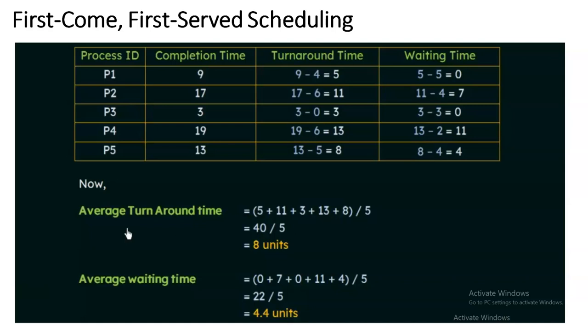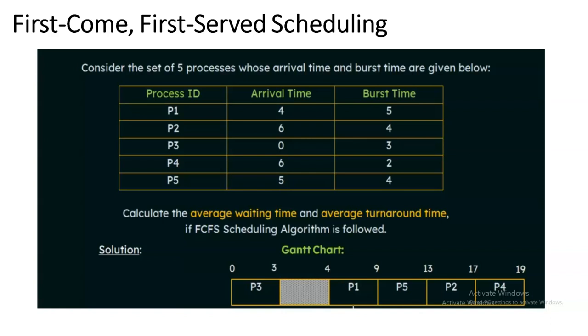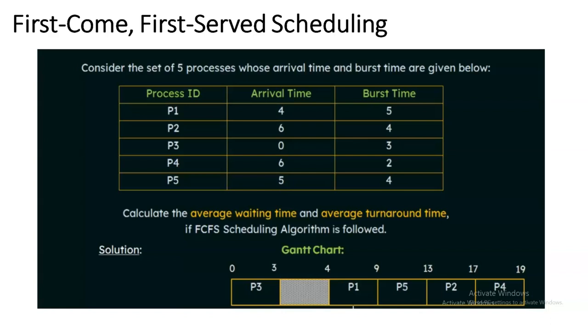This is how we perform First Come First Serve scheduling. Draw the Gantt chart considering arrival time first; if arrival times are equal, use the process ID — the smaller process ID is served first. Use the two formulas to calculate turnaround time and waiting time. The remaining scheduling algorithms will be discussed in upcoming videos. Thank you.